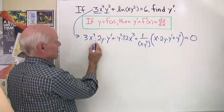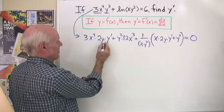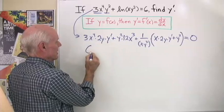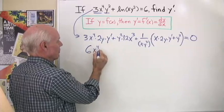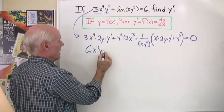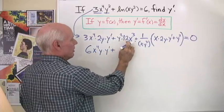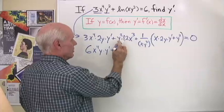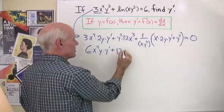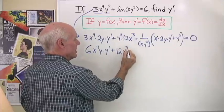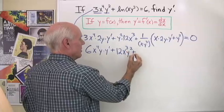Here I have 3x to the fourth times 2y times y prime, so that's 6x to the fourth y times y prime, plus 12x to the third y squared.